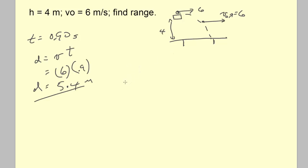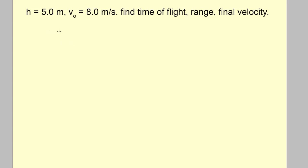That pretty well concludes the first example. We'll run through all this with one more set of data, trying to be a bit more efficient, and then do one example where we figure out how to hit a target 7 meters away. In the second problem: 5-meter platform, ball kicked out at 8 m/s — find the time, range, and final velocity.